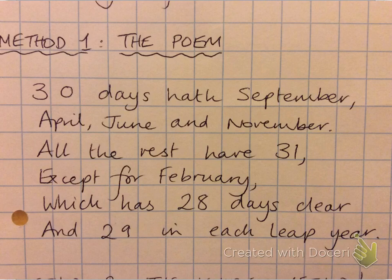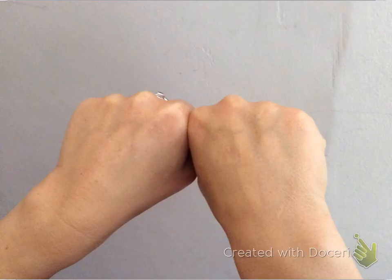So from here, if you know that September, April, June and November have got 30, then all the rest have got 31. The exception is February, which has that extra day in a leap year. So you can work out any month from there.